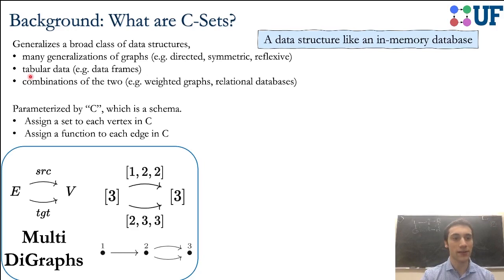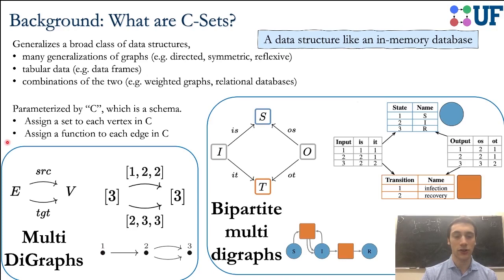I'm going to show some examples of C-Sets and how they're defined. We'll start with multi-directed graphs. That means we have a set of edges, and we have a set of vertices, and we have a source and a target function. What I was highlighting here was the schema C. If I wanted to represent this particular graph, I would say there are three edges, and there are three vertices, and I need to say for each edge what its source is, and for every edge what its target is.